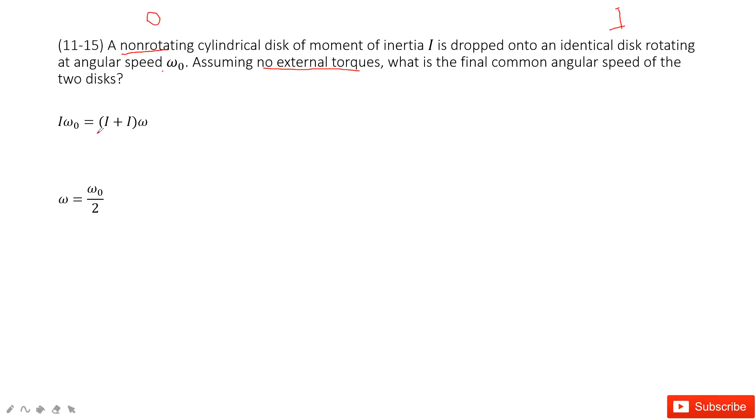And finally, we have these two disks attached together. So we have 2I, I plus I, 2I times the final angular speed. In this one, we can get the final answer. Thank you.